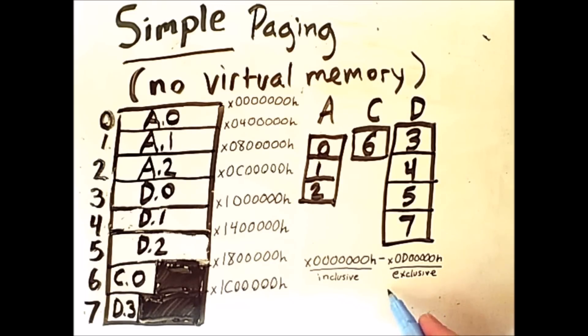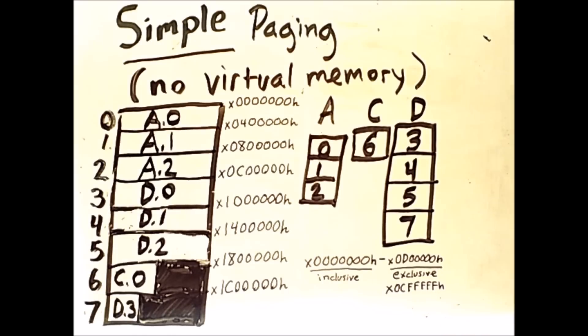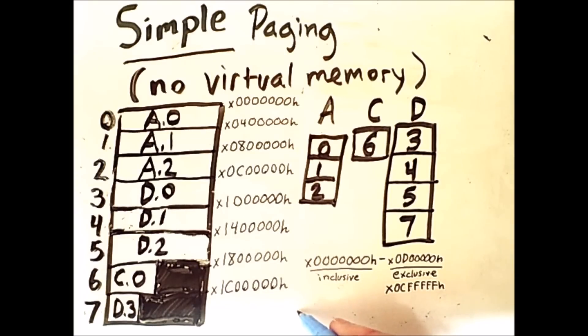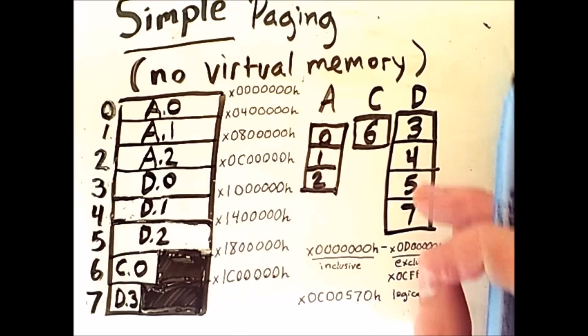So process D can't actually access this address. It can access one address before this one, which would be this 0xCFFFFF address. So taking that into consideration, let's see what happens if process D wants to access its following logical address. So this address starts with 0xC, which if we simply think about how these numbers increase, if we were within the first 4 megabytes of these pages, we would have an address that was less than 0x400000.